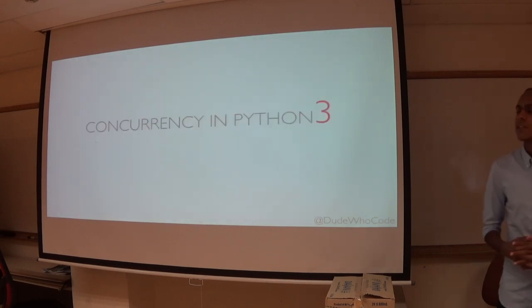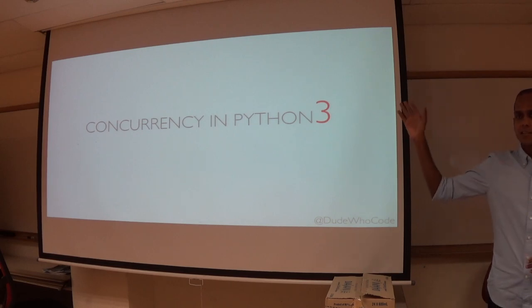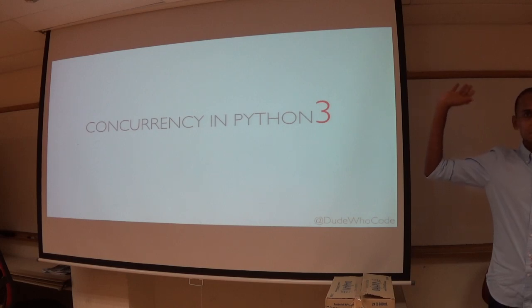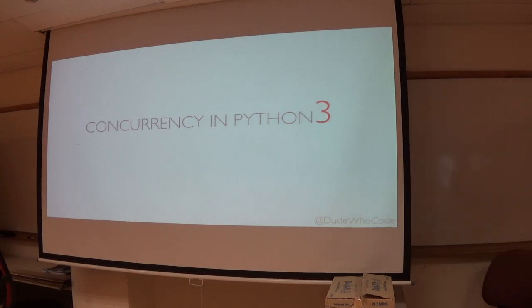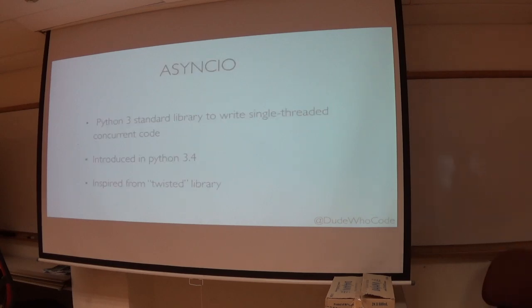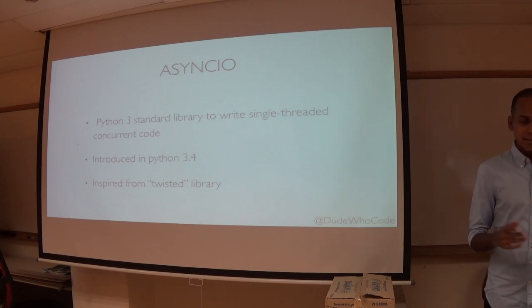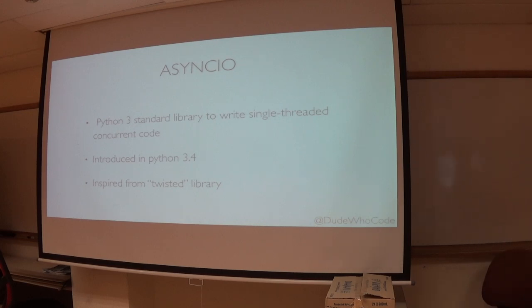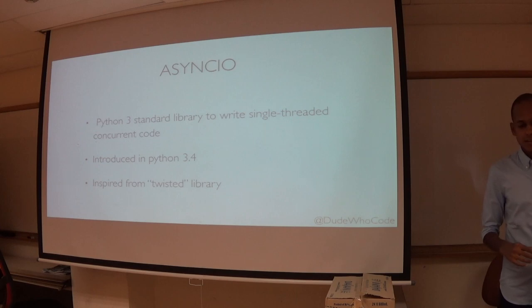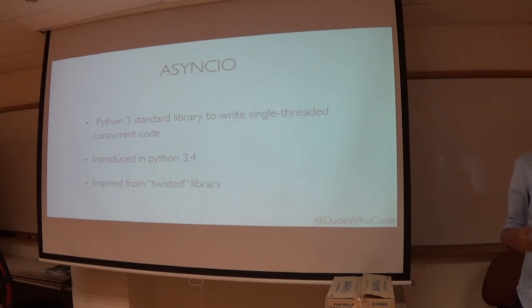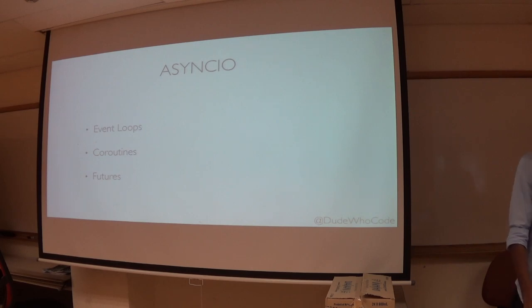Now let's jump into concurrency in Python 3. AsyncIO is a standard library in Python 3, it's single-threaded, and it was introduced in Python 3.4. It's heavily inspired by a library called Twisted, which has been around since Python 2.7.